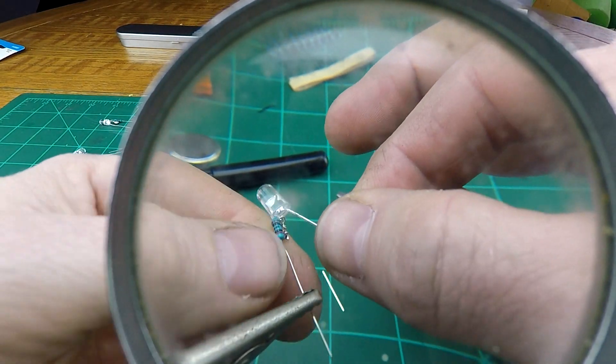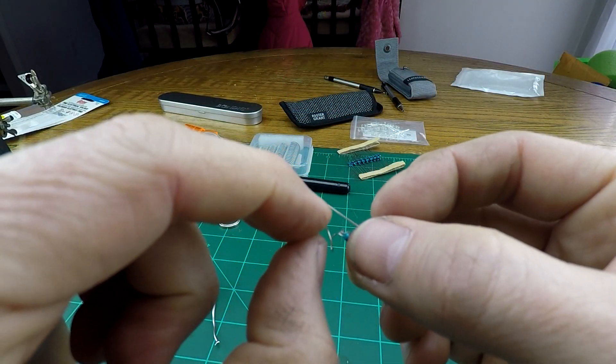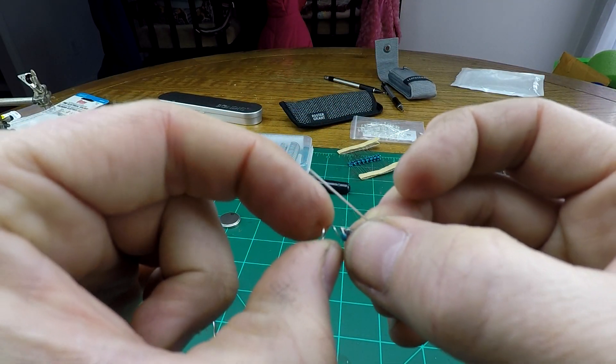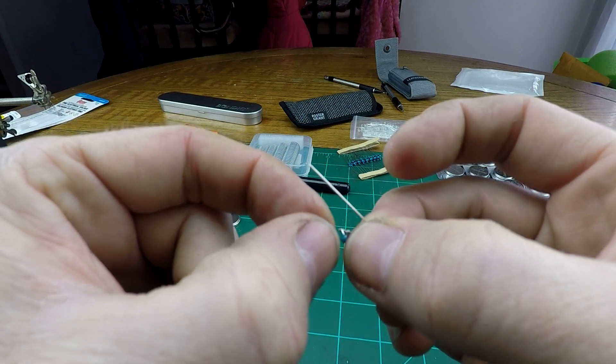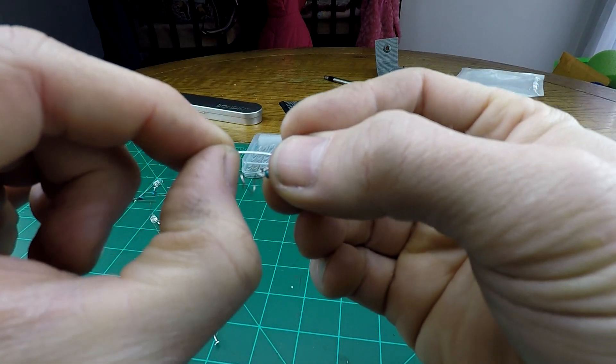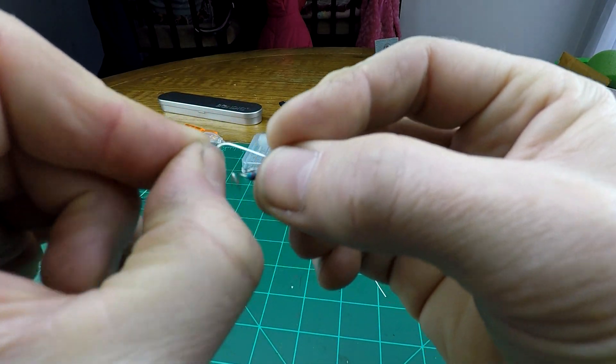I might flip it over and do the other side. So that'll make a tight bond right now. Now to complete the little blinky throwy. Pull that around. Fold this over.